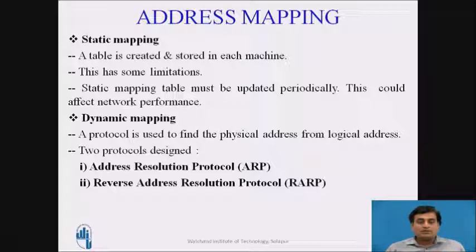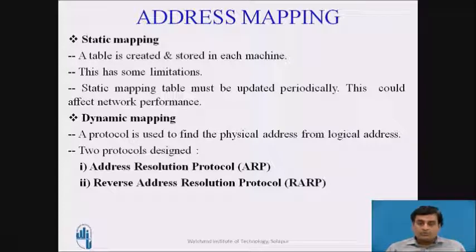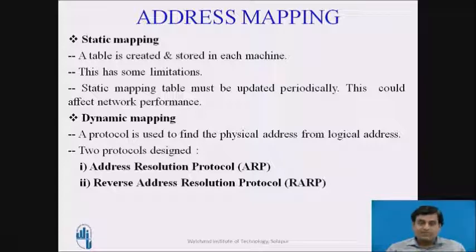In static mapping, a table is created and stored on each machine on the network. However, this has limitations: whenever a mobile computer moves in or out of a network its hardware address changes, and whenever a machine's network interface card is changed its IP and hardware address change. Therefore, the static mapping table must be updated periodically, which could affect network performance.